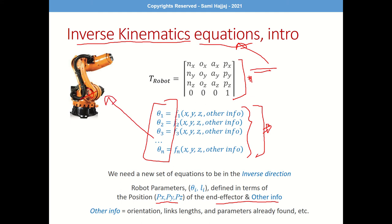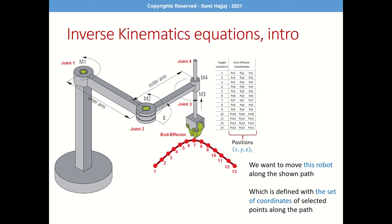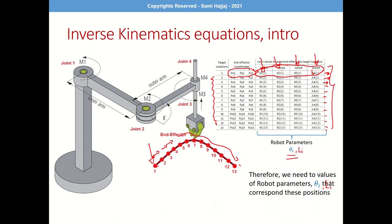The control equations are the equations fed into the controller, which then controls the robot parameters. In order for the controller to control each joint, we need to tell it the values — and those values depend on the inverse kinematics equations. Those equations take the required position and orientation of the path and result in the robot motion we want to achieve.